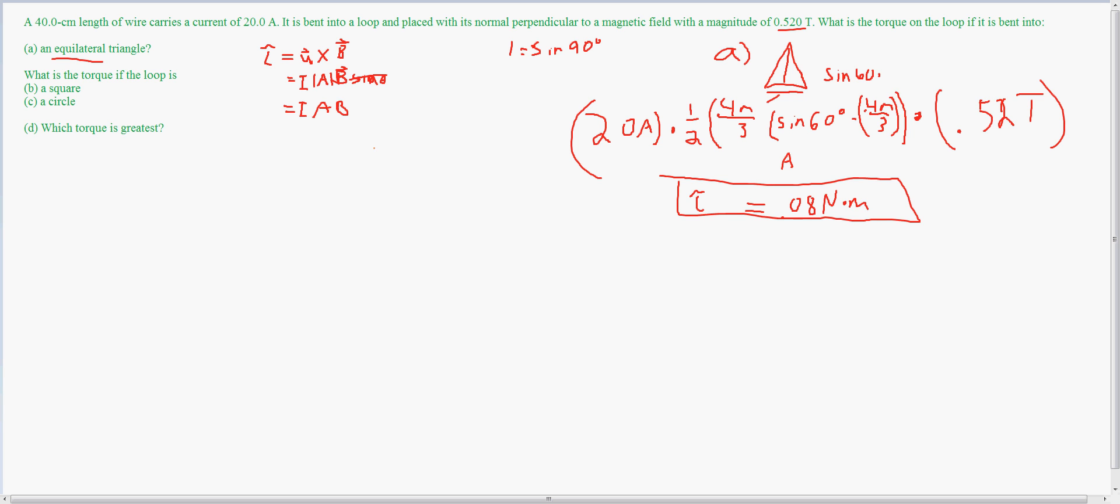Now I'll do the next one, which is B. And what we have in this one is a square. So I have this square, which I need to take 0.4 meters divided by 4 in order to get the length of each side, which is equal to 0.1 meters. So now that I have the length of each side, to get the area of the square, we have area is equal to 0.1 meters squared.